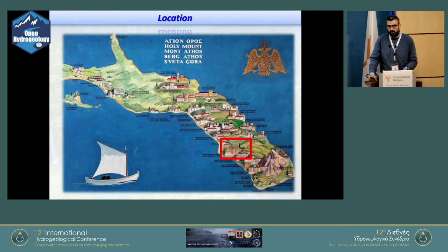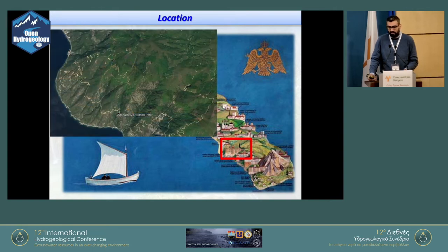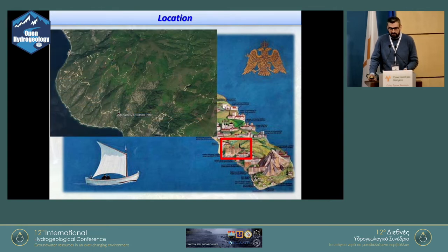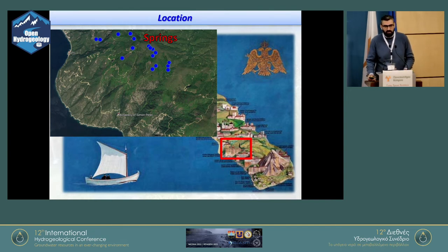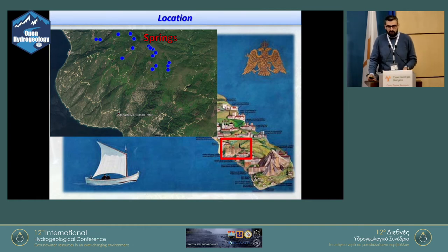Η περιοχή του Αγίου Όρους βρίσκεται στη Βόρεια Ελλάδα, στη Χερσόνησο του Άθω. Το μοναστήρι που μας φιλοξένησε είναι η Ιερά Μονή Σίμωνος Πέτρας, και ένας από τους βασικούς σκοπούς της έρευνας ήταν να βελτιώσουμε τις συνθήκες υδρομάστευσης της περιοχής, δηλαδή των πηγών που αποτελούν την κύρια πηγή υδροδότησης του μοναστηριού.